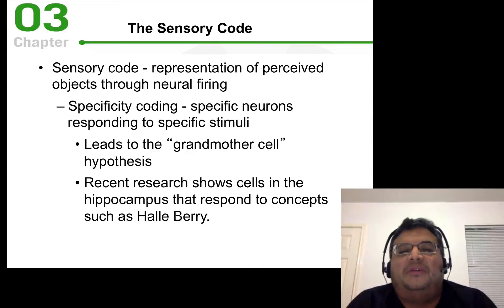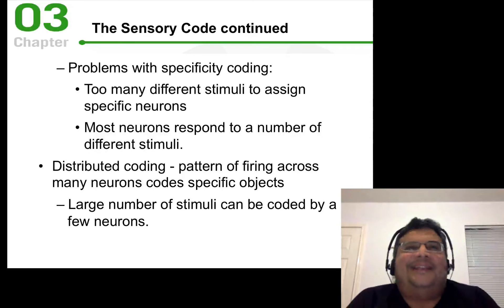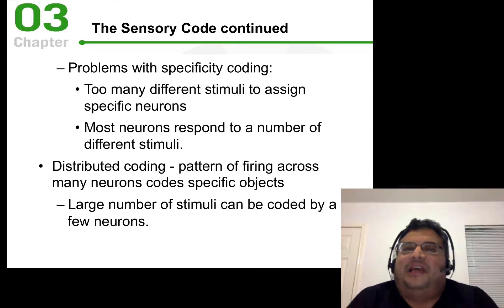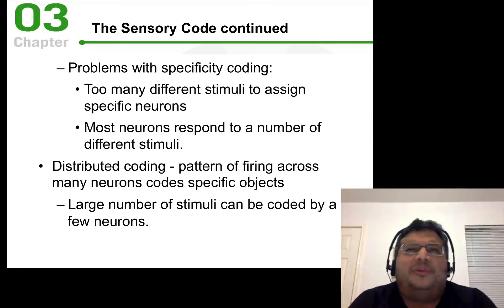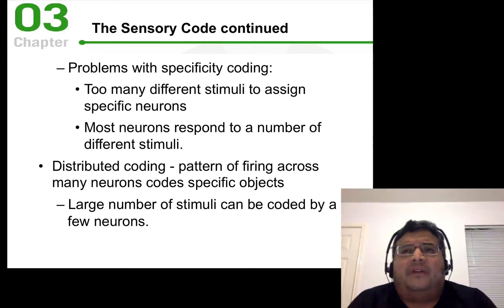We can actually show you a picture of, say, Halle Berry, and find cells in the hippocampal area that respond only to those particular concepts. The problem with having specific cells or circuits dedicated to a single stimulus is the incredible number of stimuli we have to code in our environment. When you record from a particular cell, it turns out it always responds to more than one stimulus, suggesting that perception involves lots of different neurons firing together in specific patterns.